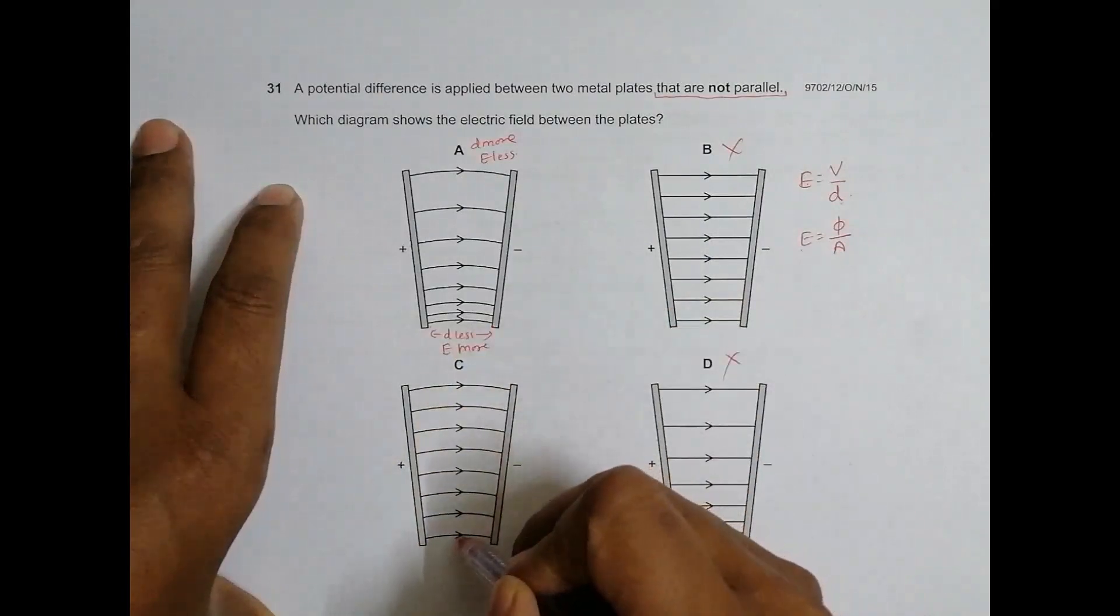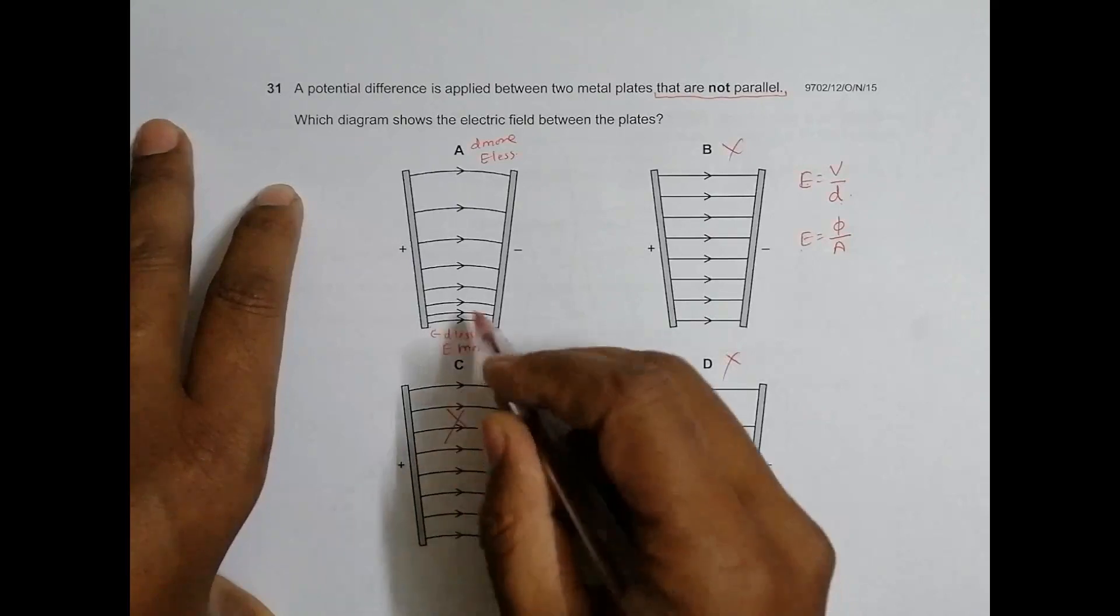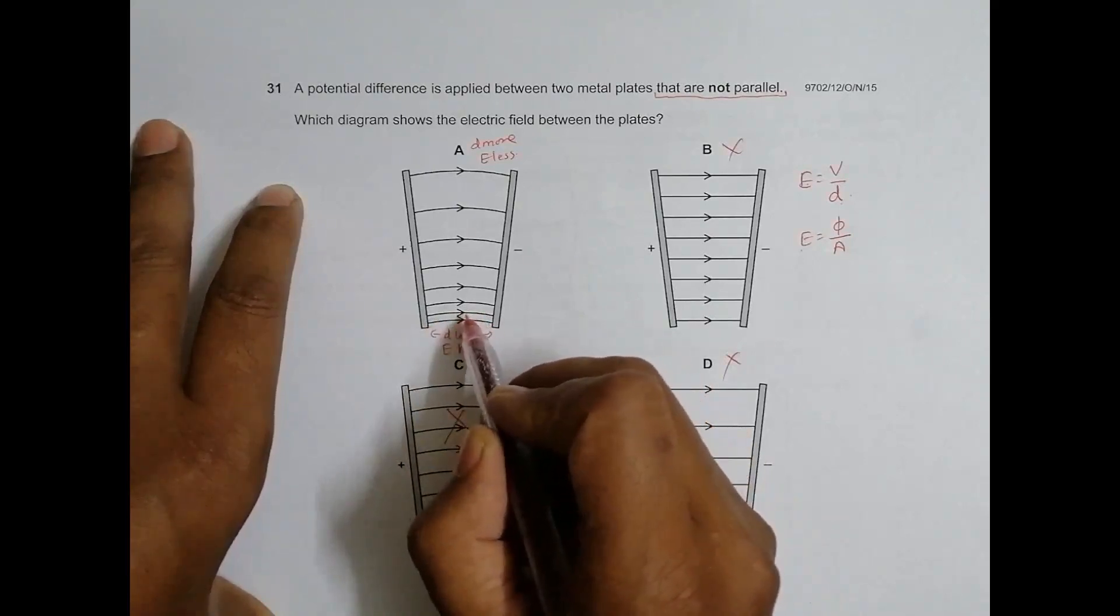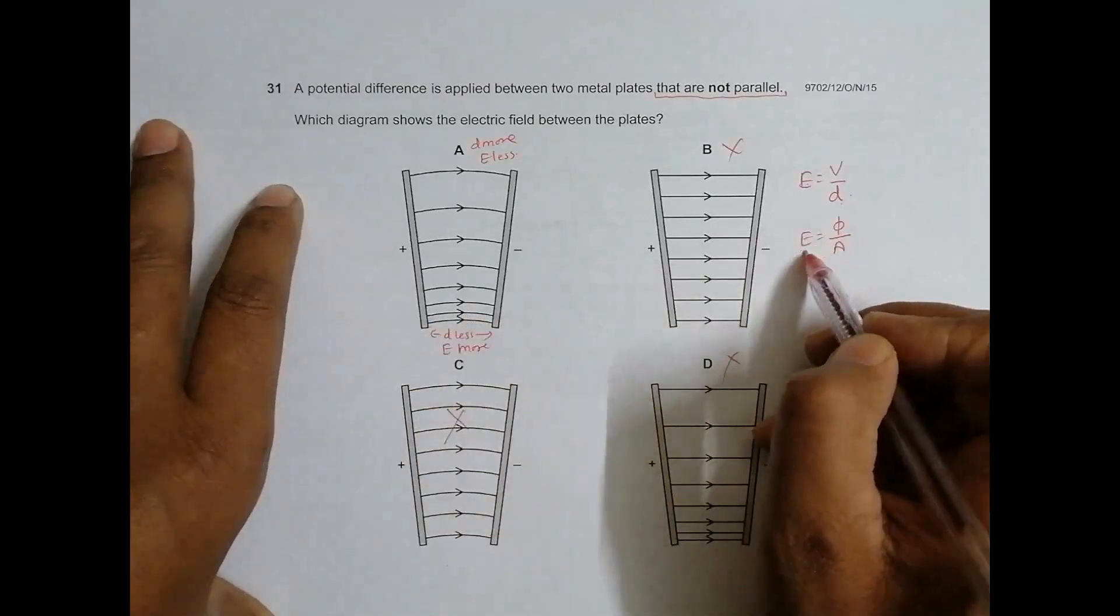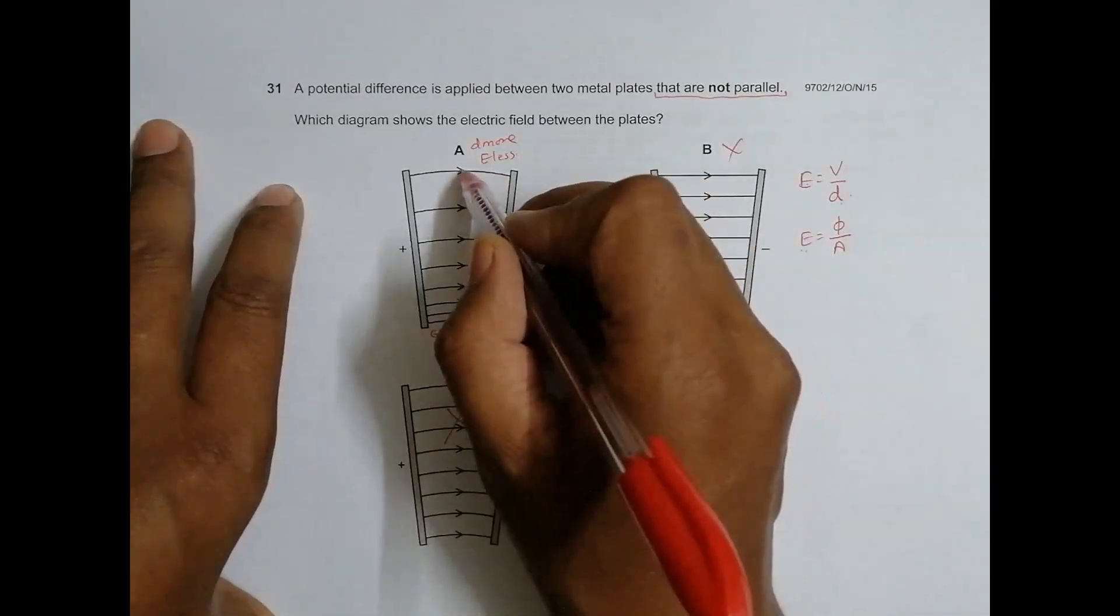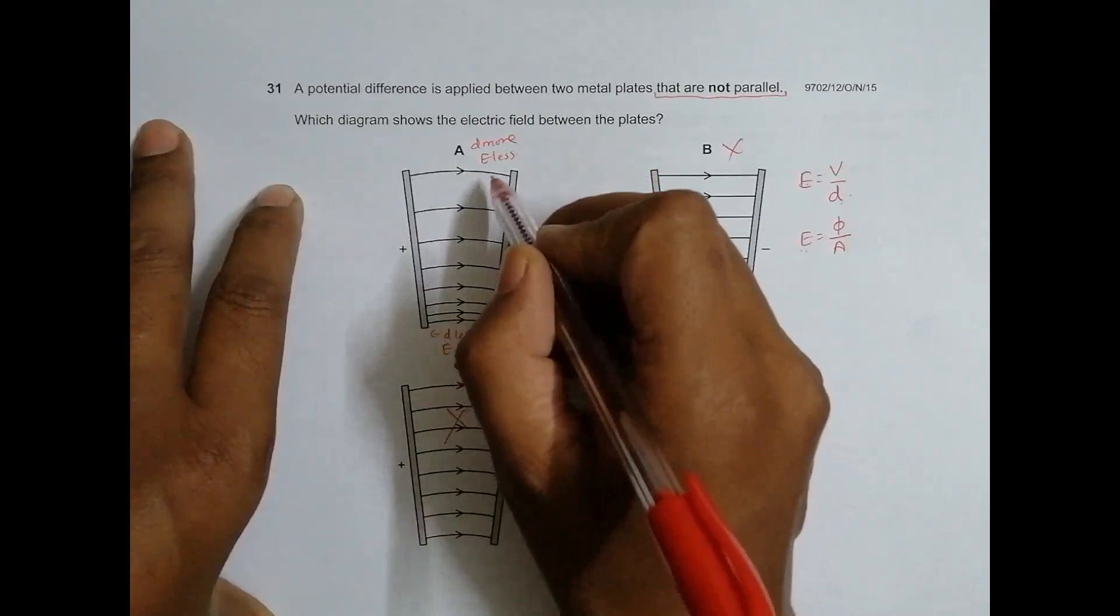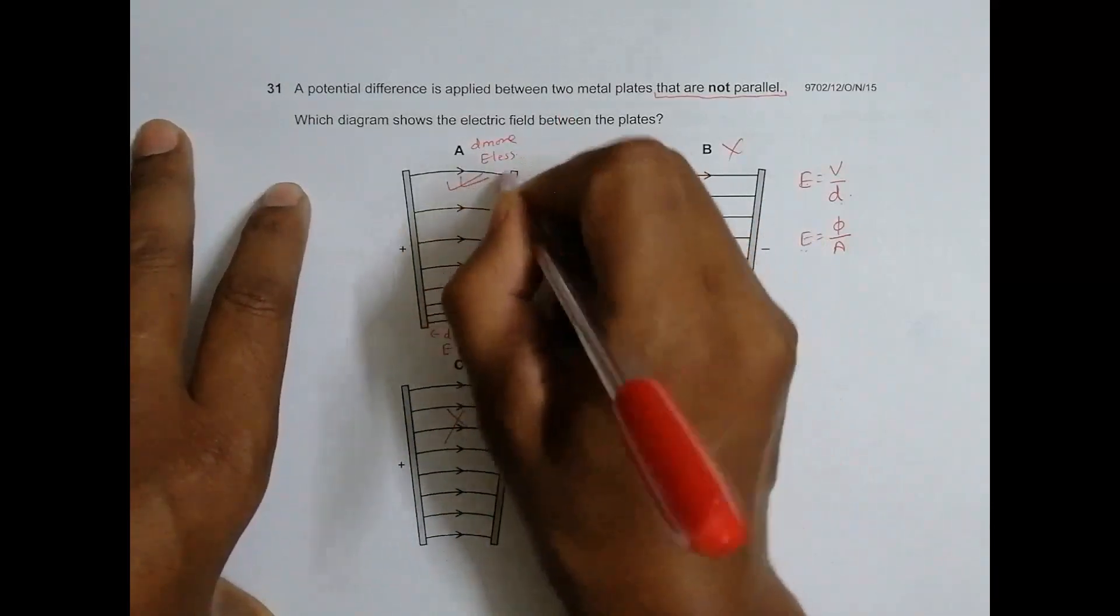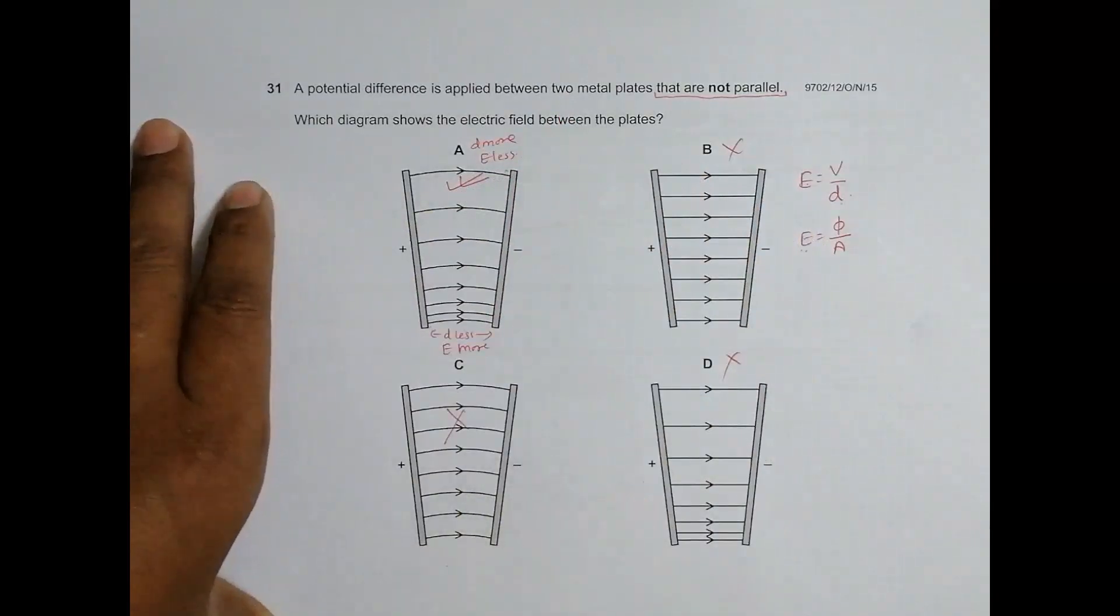So what we have is: here the lines of force are very uniformly spaced, so this is not correct. And here at this side, the field lines are dense, flux density is high. On the other side, field lines are less dense, which means E less and D more also. So that's why choice A is the correct choice and all the others are incorrect.